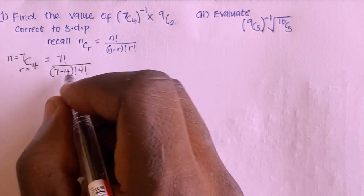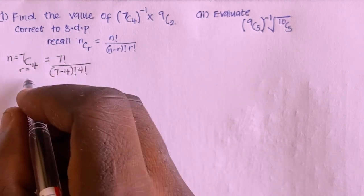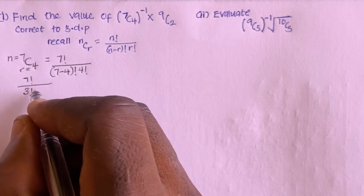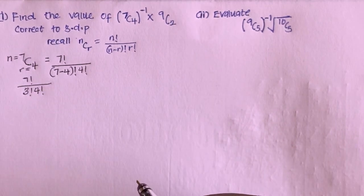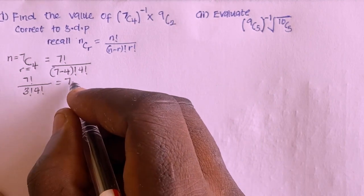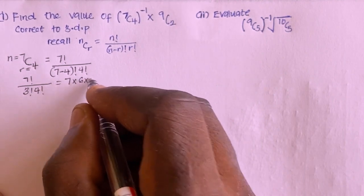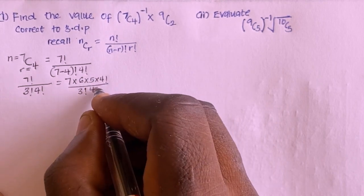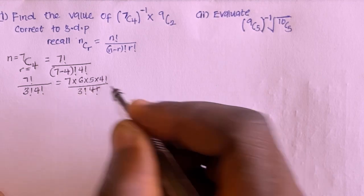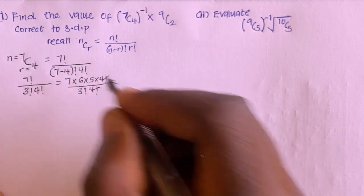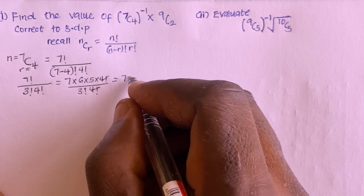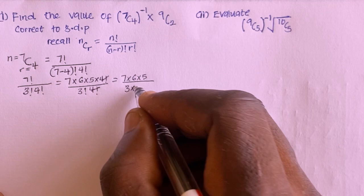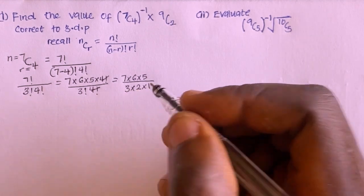Expanding this, I have 7 factorial divided by 3 factorial times 4 factorial, which is written as 7 multiplied by 6 multiplied by 5 multiplied by 4 factorial, divided by 3 factorial times 4 factorial. The 4 factorial cancels, leaving 7 multiplied by 6 multiplied by 5, divided by 3 multiplied by 2 multiplied by 1.